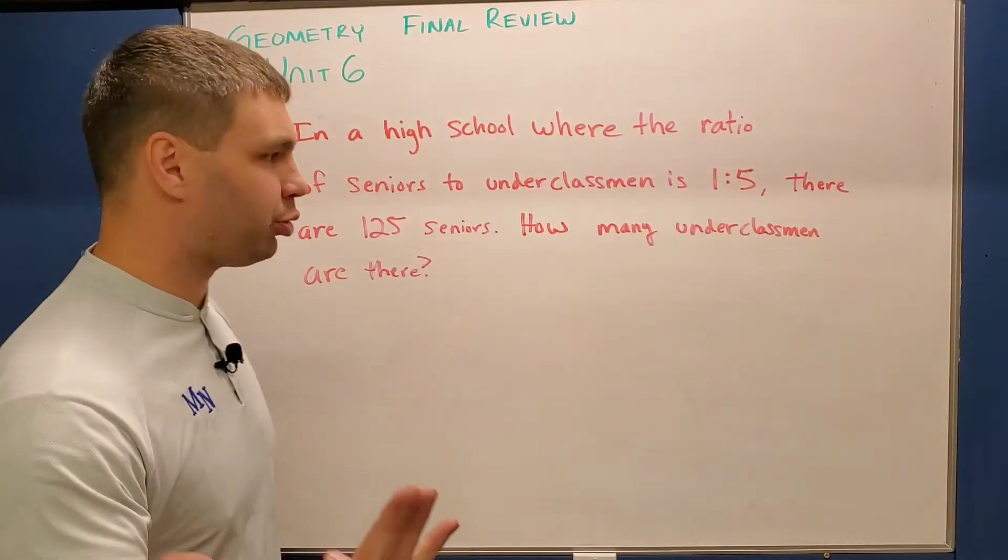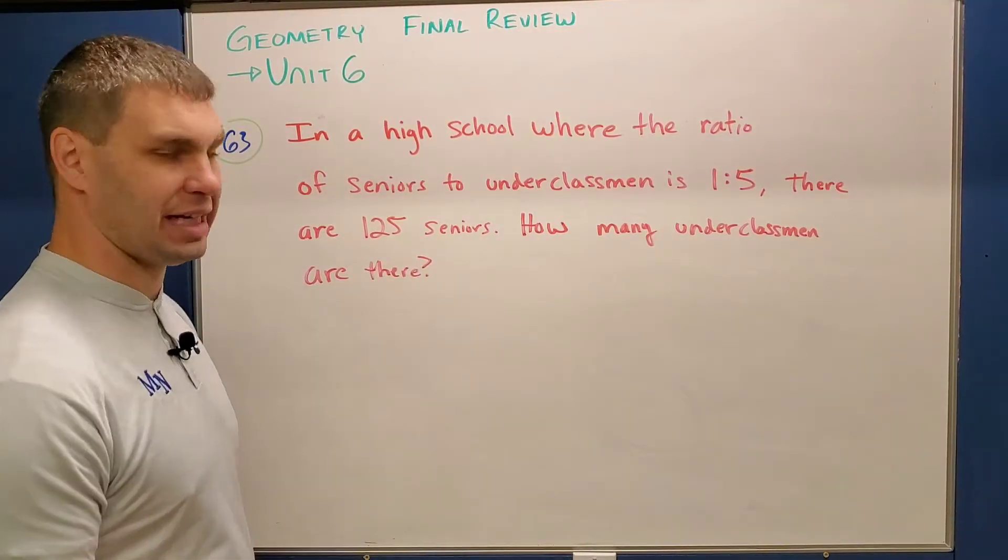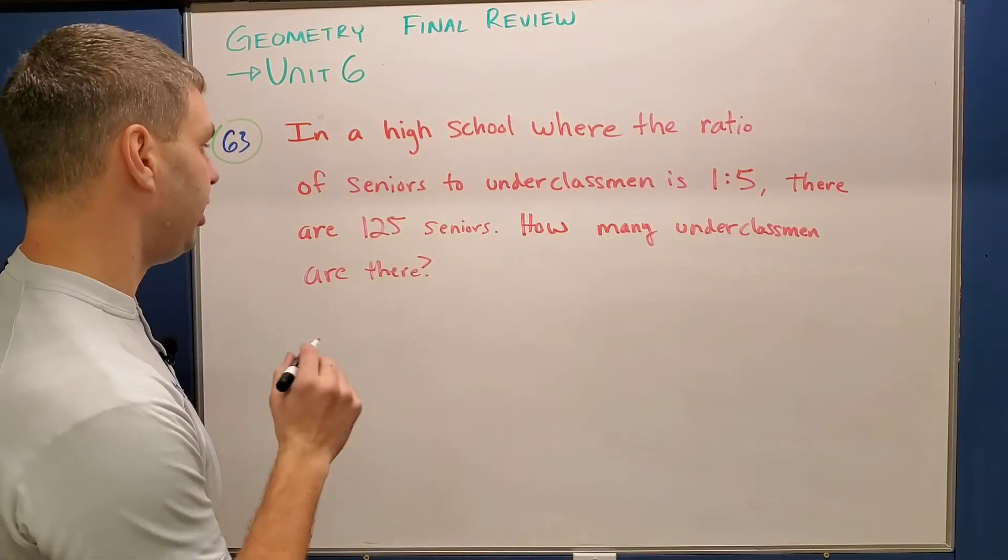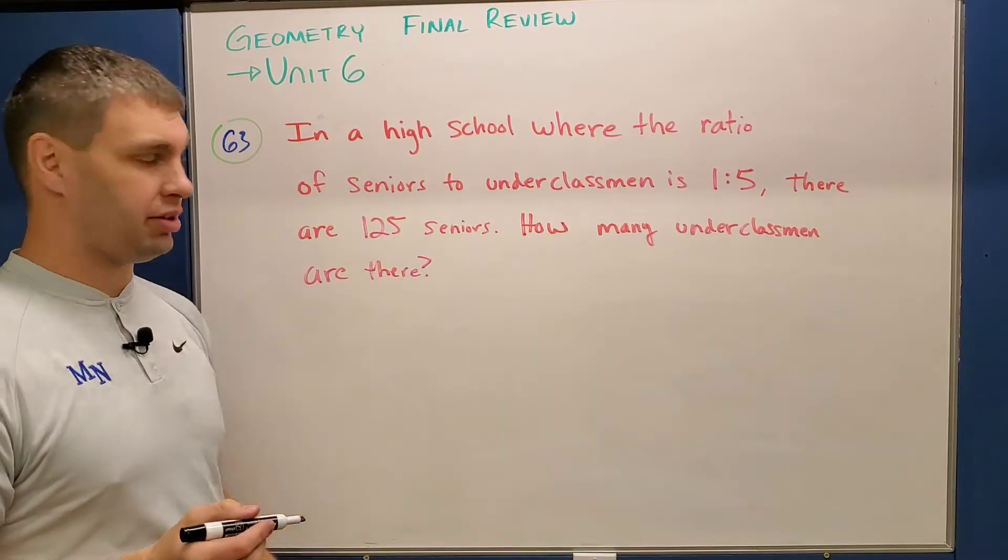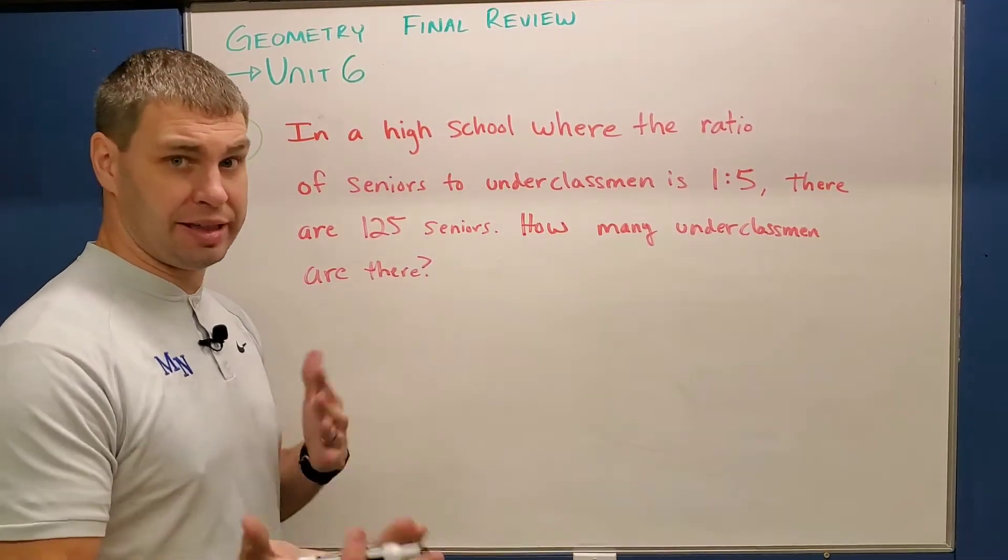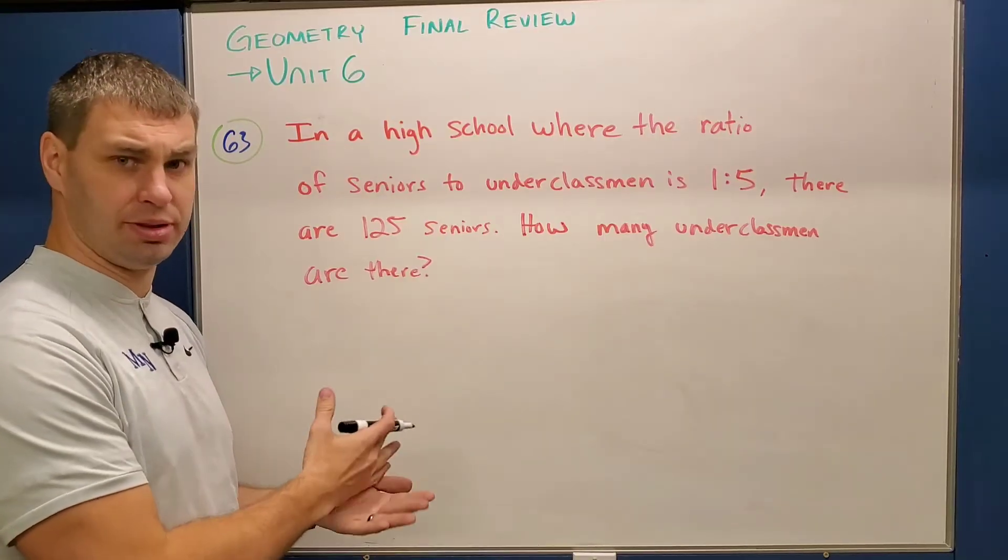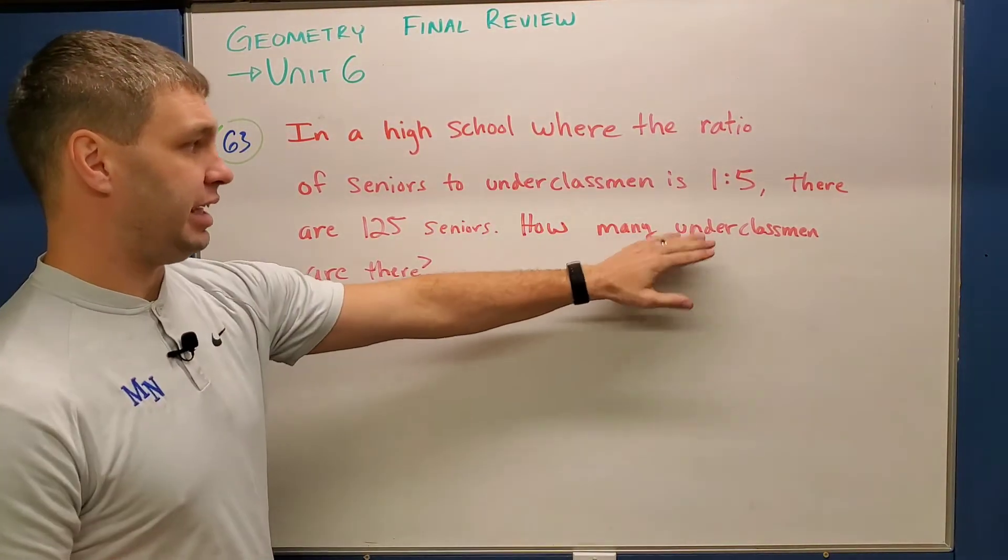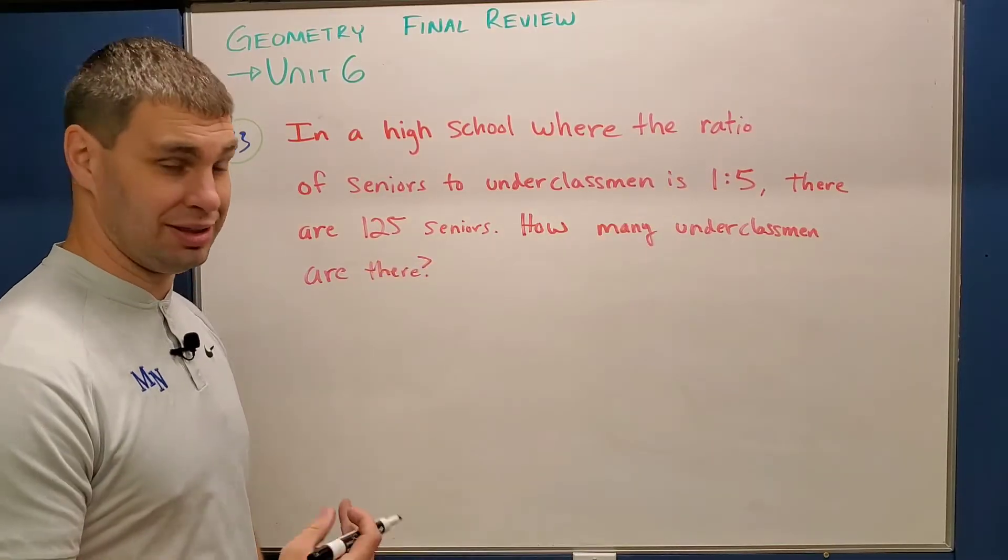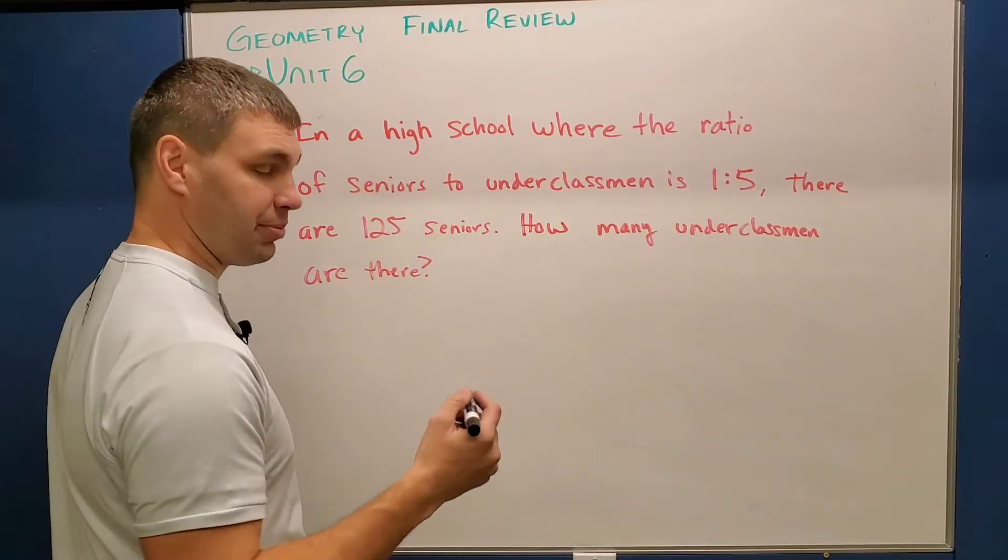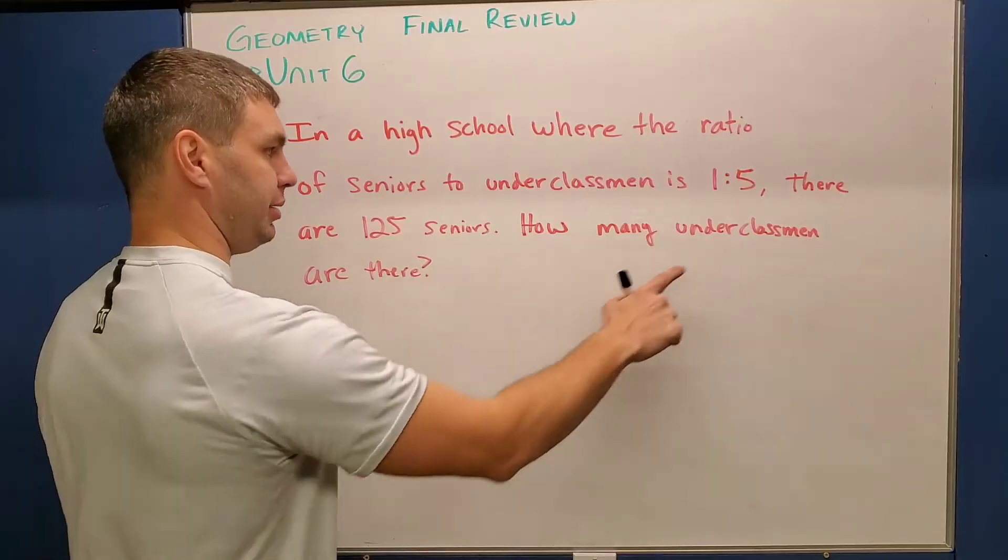Here we have a word problem. Let's read it. It says, in a high school where the ratio of seniors to underclassmen is one to five, there are 125 seniors. How many underclassmen are there? Now we don't really care if underclassmen is juniors, sophomores, and freshmen, or just freshmen and sophomores or whatever, because it gives us what the ratio is. It's one to five.